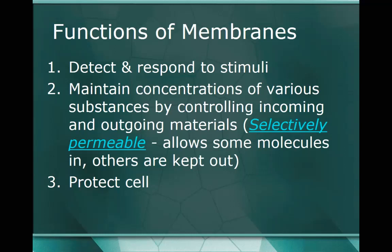Number two: maintain concentrations of various substances by controlling incoming and outgoing materials. This is where the term selectively permeable comes in. We talked before about the idea that the plasma membrane or cell membrane acts like a bouncer - it's what's regulating what's coming in and what's going out of the cell. Mostly food and water coming in, waste products being eliminated. So selectively permeable means some things come through and others are kept out. If you're selective, you don't just take everything - only specific things. The membrane takes what it wants, what it needs, and holds at bay those things that don't belong inside the cell.